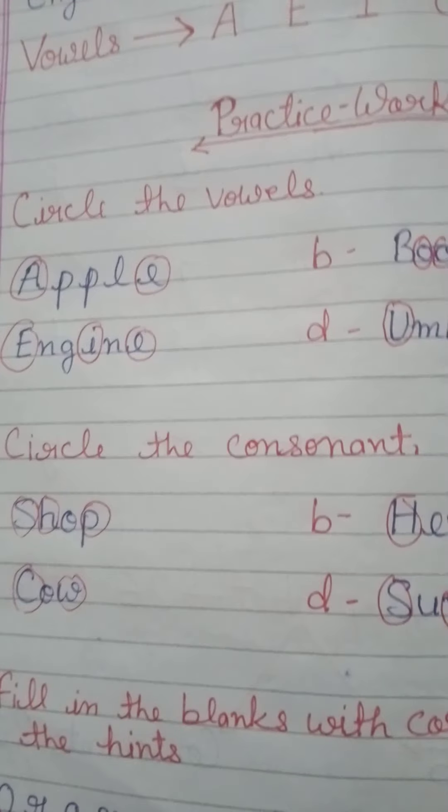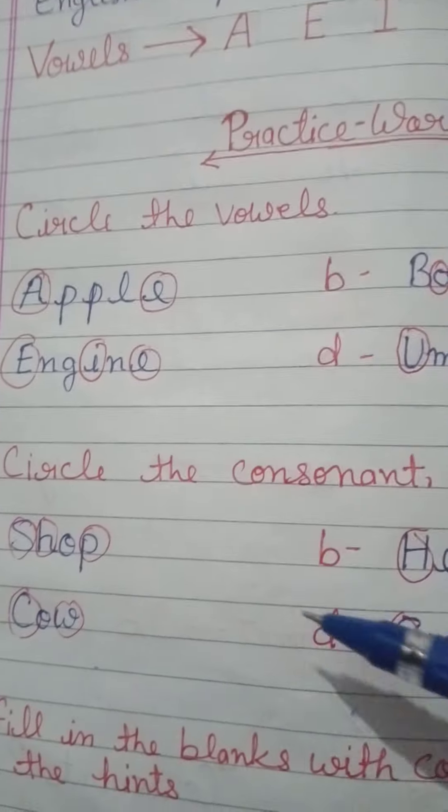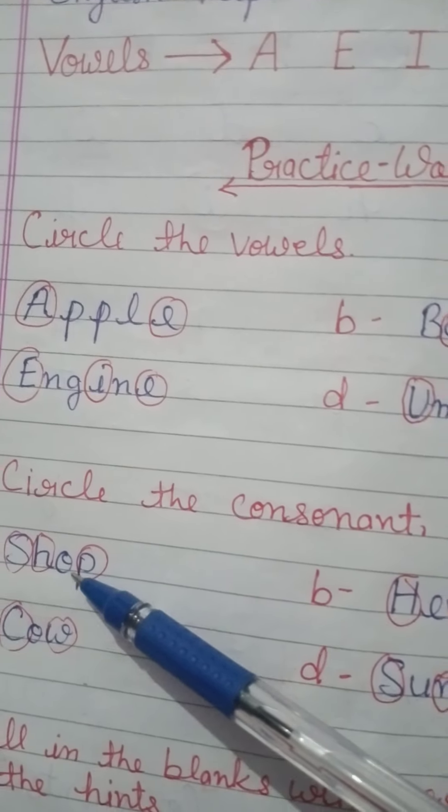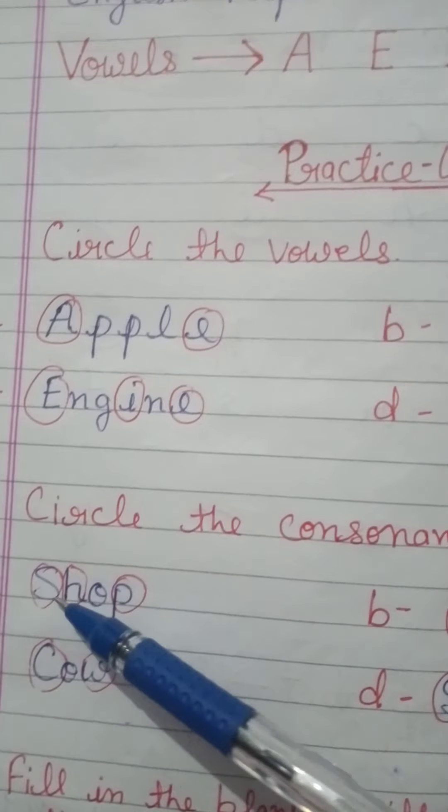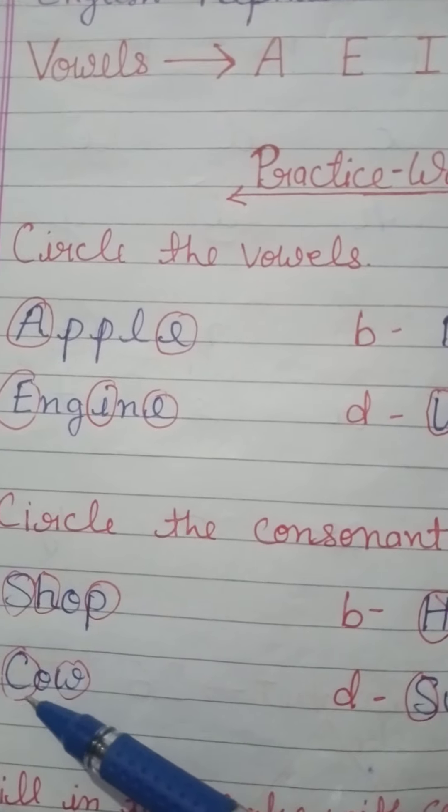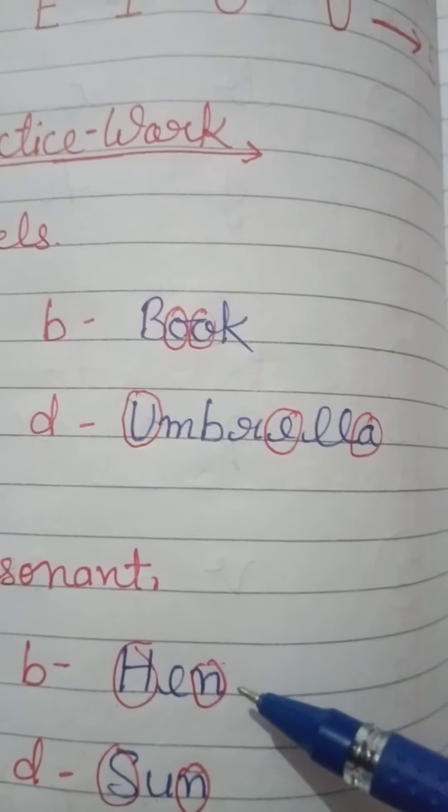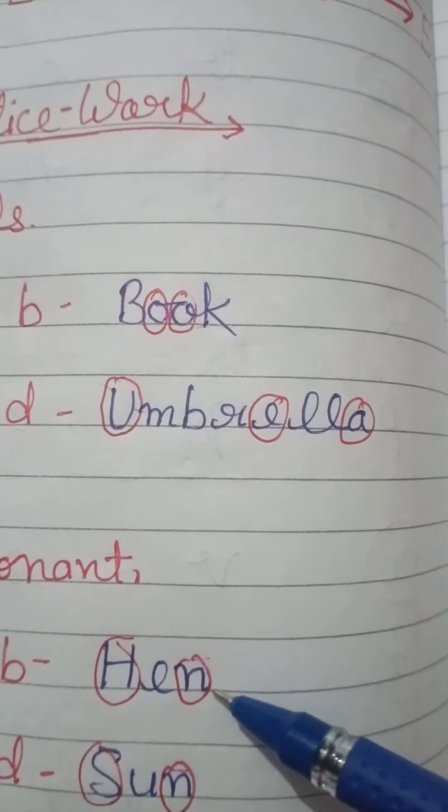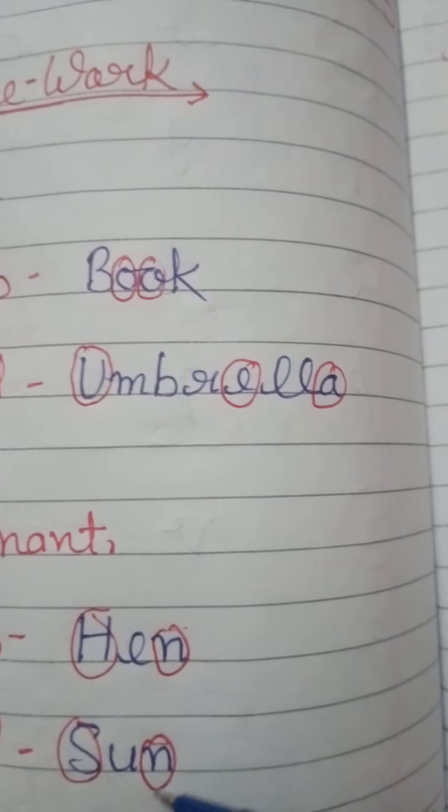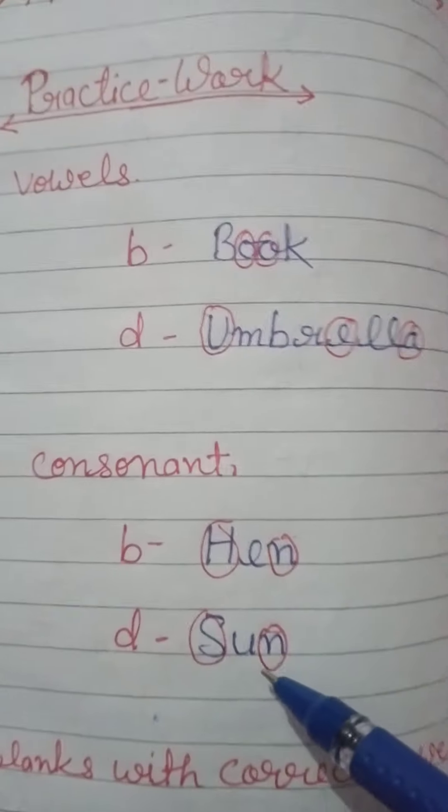Next exercise, see: circle the consonant. Above we circled the vowels; here we need to circle consonants. So here we will leave the vowels. In shop, O is vowel, we left it. S, H, P we have circled. In cow, O is vowel. C and W are consonants, we circle them. In hen, E is vowel. H and N are consonants, we circled them. In sun, S and N are consonants, we circled them, and U is vowel.